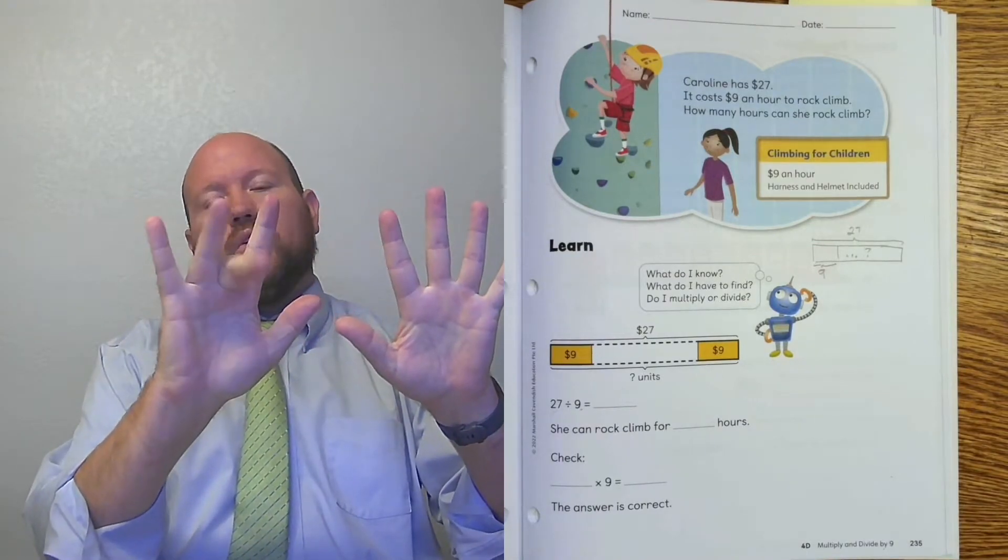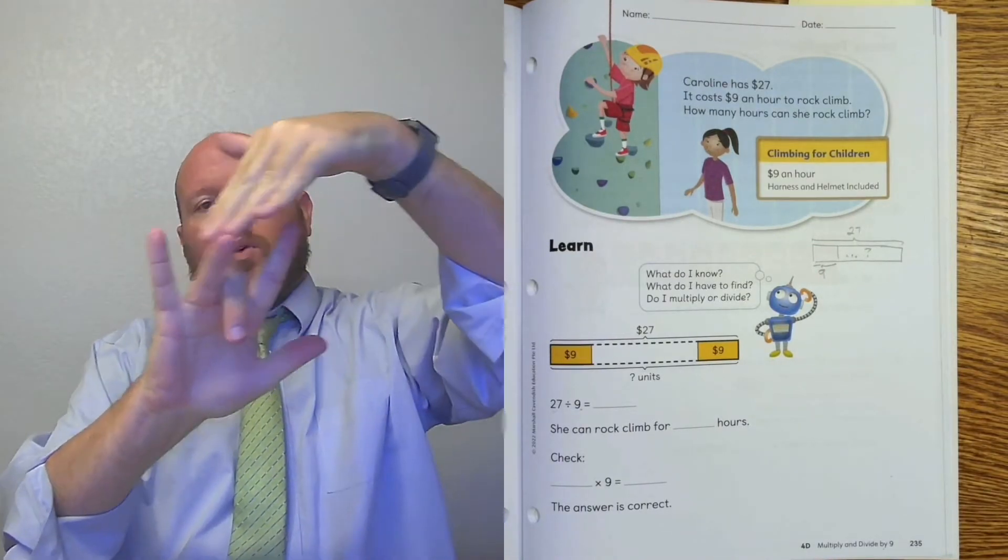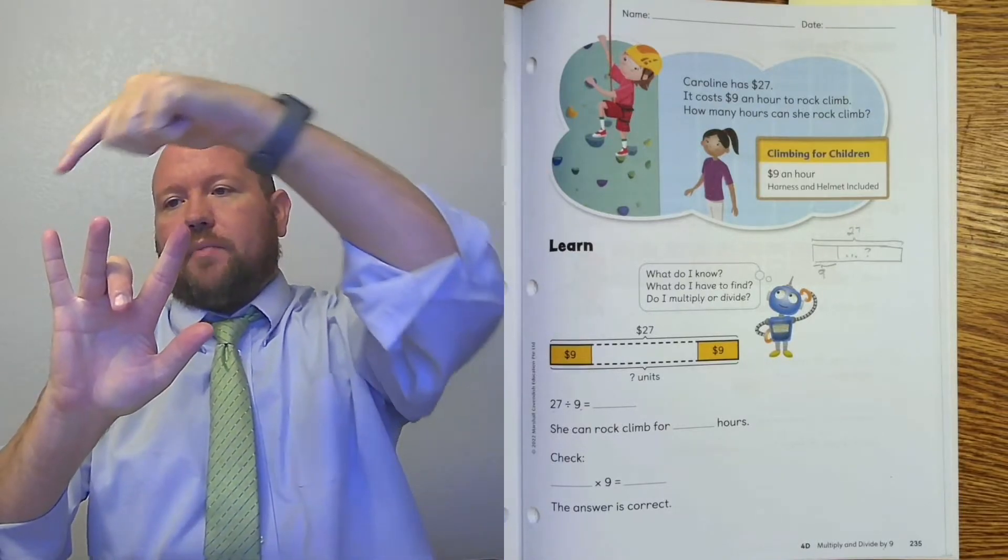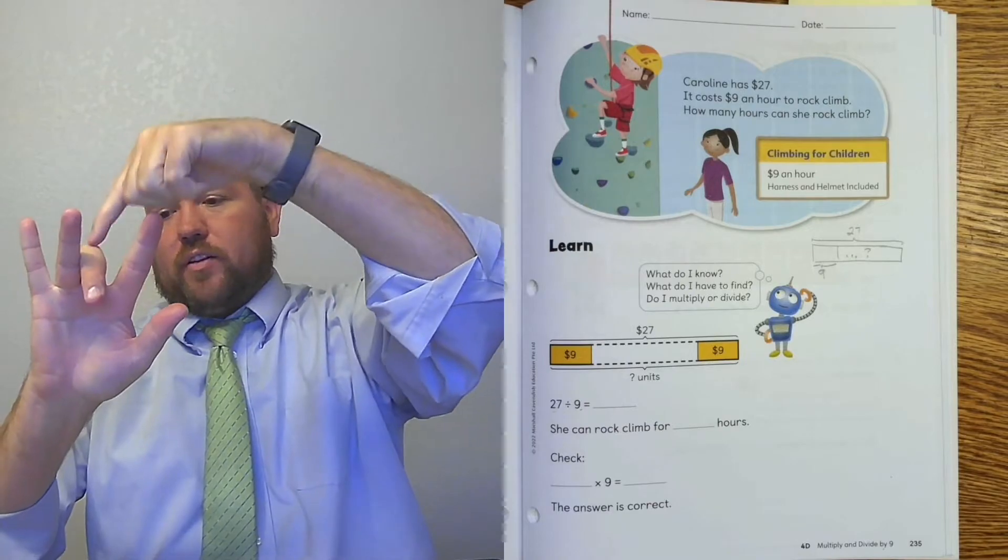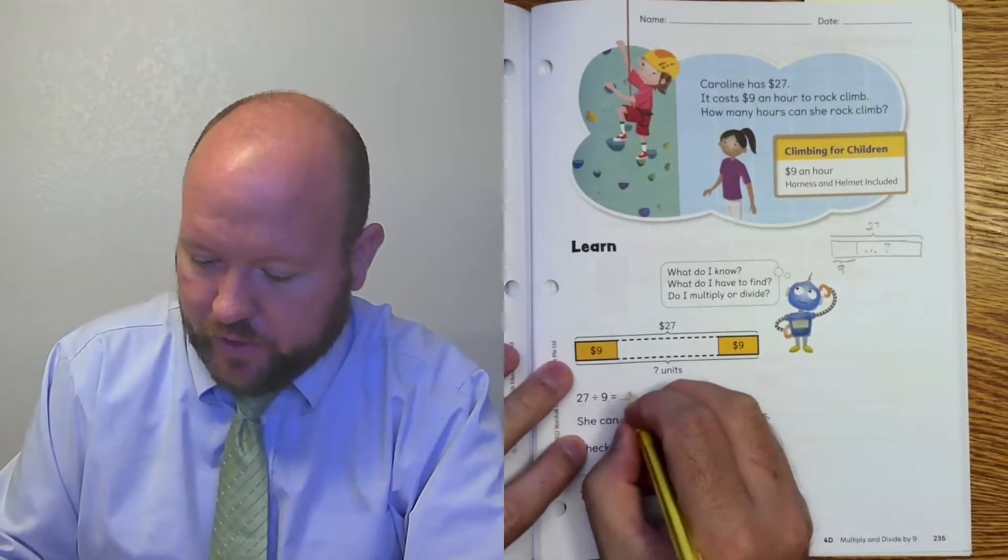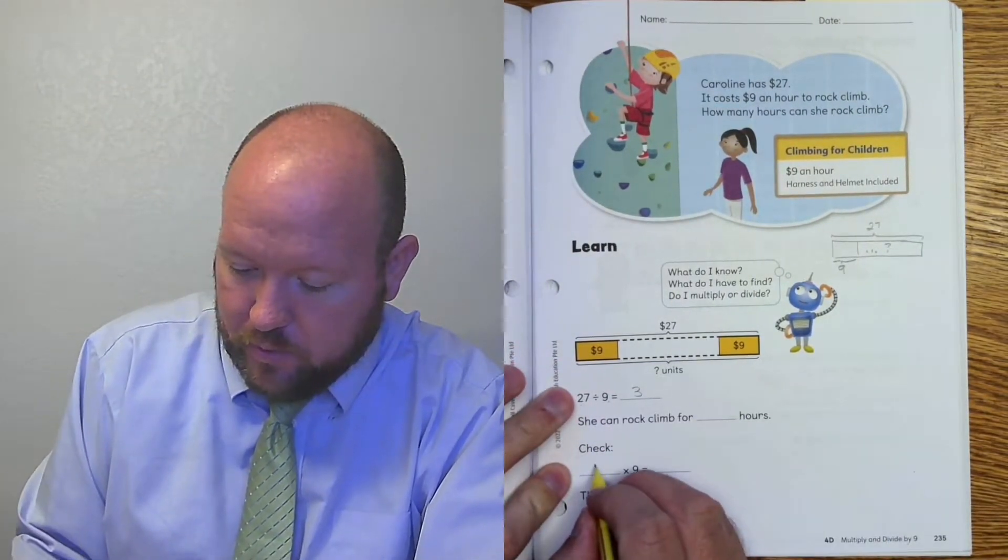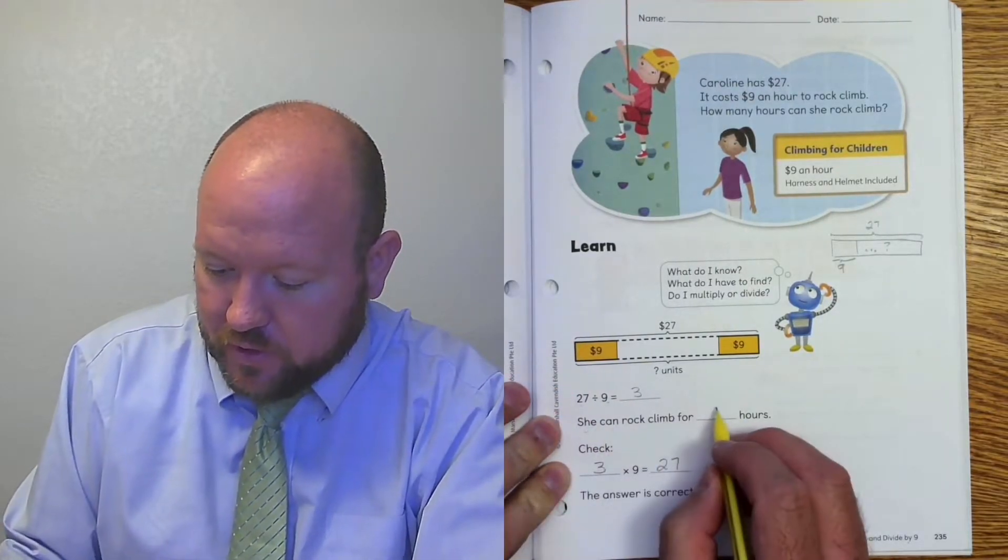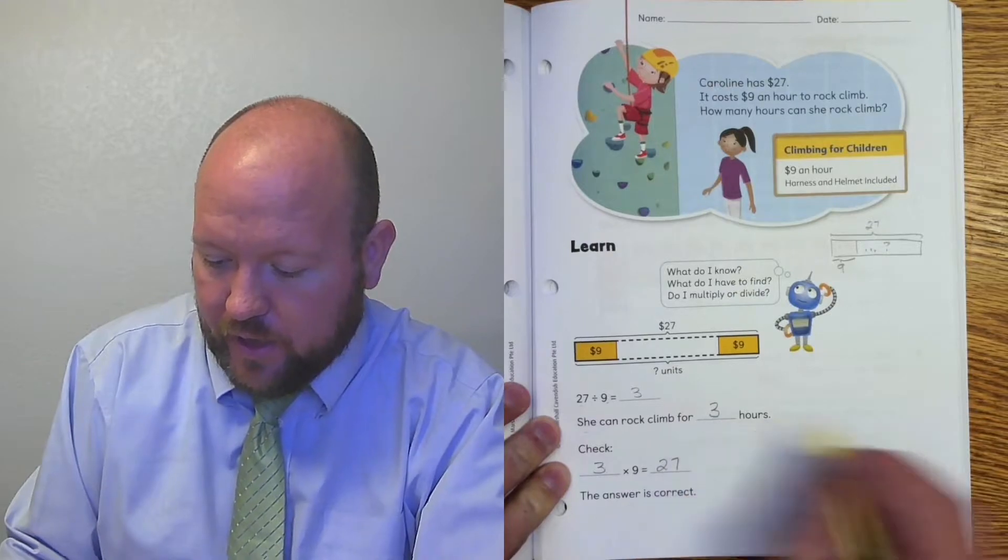So I need 27. So I need 2. So I'm going to put that finger down. There's 20 and 7. And so what finger did I put down? I put the 1, 2, 3 finger down. I put the 3rd finger down. So it is equal to 3. And that's true because 3 times 9 equals 27. So she can climb for 3 hours.